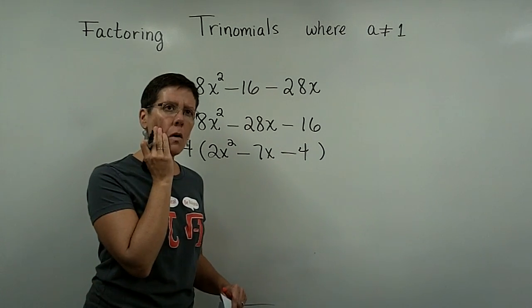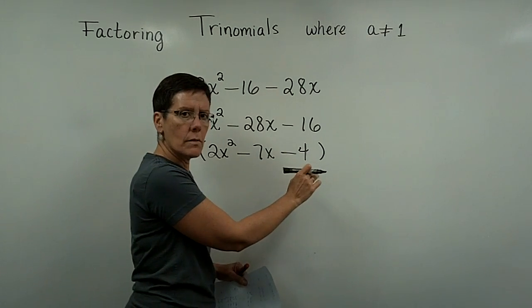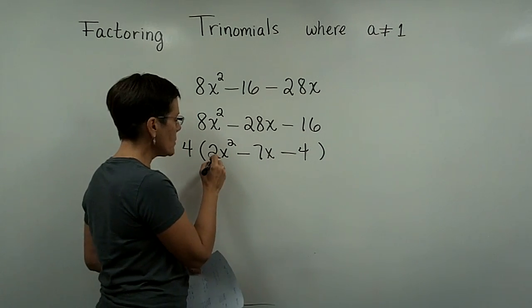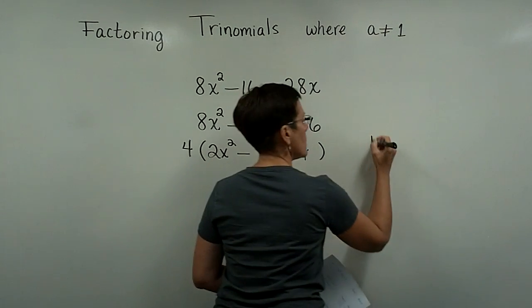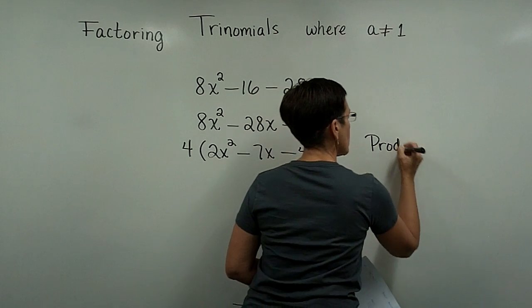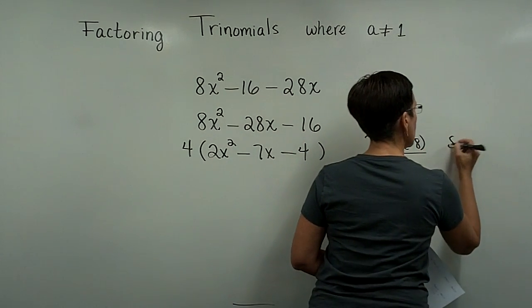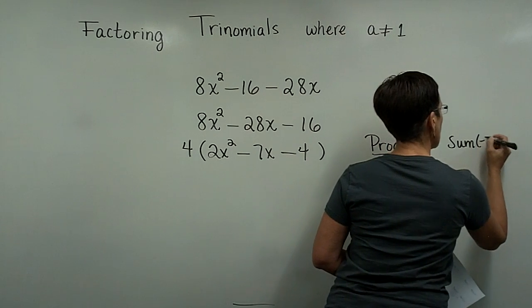And then I go, oh, this is a trinomial. And it's got a coefficient in front of the x squared term that's not a 1. So I've got to find two numbers whose product is a negative 8, and they have to add or sum up to be a negative 7.